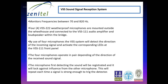For example, a system by the manufacturer Zenital monitors frequencies between 70 and 820 hertz, picking up the whistles of other vessels. Four weatherproof microphones are mounted outside the wheelhouse and connected to an audio amplifier and loudspeaker within the bridge. The system detects the direction of the incoming signal and activates corresponding lights on the panel. The four microphones always operate in pairs depending on the direction of the received sound signal; the first microphone to detect the sound registers and locks against influence from other microphones.